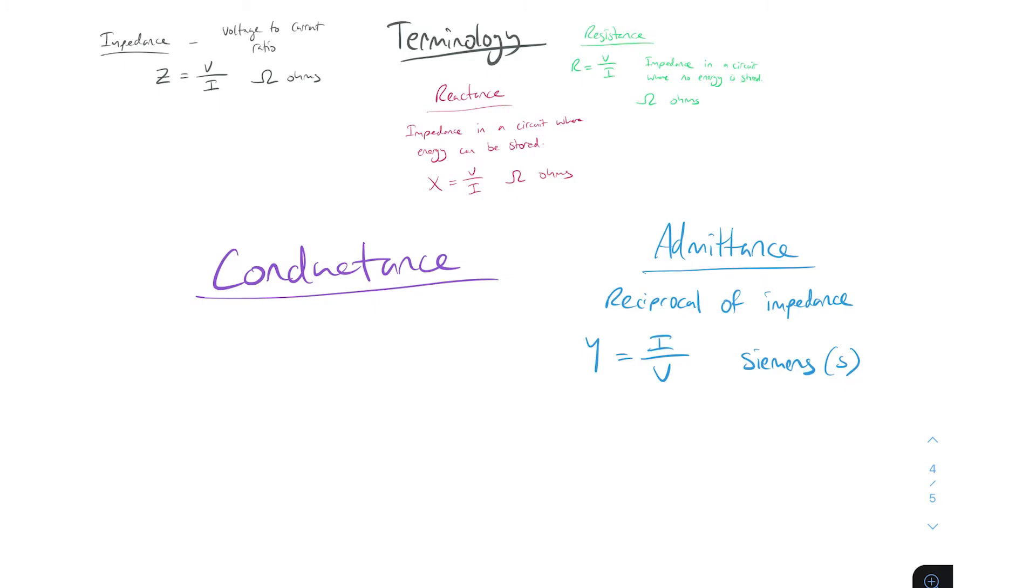Admittance is the reciprocal of impedance - we're going down rabbit holes here. Impedance is the voltage to current ratio, admittance is the reciprocal of impedance, and conductance is admittance of a circuit in which no energy is stored.